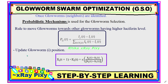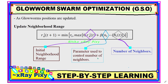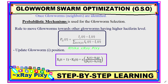After selecting neighbors, we update the position for each glowworm. Using the position update equation, we calculate the new position based on the previous position, the neighbor's position, and the individual's position.